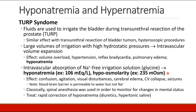Along those lines, we can discuss TURP syndrome. TURP is a transurethral resection of the prostate, and this procedure is done through the urethra with a scope. Fluids are used to irrigate the bladder during this procedure. Even though it's called TURP syndrome, it can occur with other similar procedures — resection of bladder tumors, hysteroscopic procedures — and they occur when large volumes of irrigation with high hydrostatic pressures are used, and that irrigation fluid is absorbed through the organ being infused, getting into the intravascular volume.